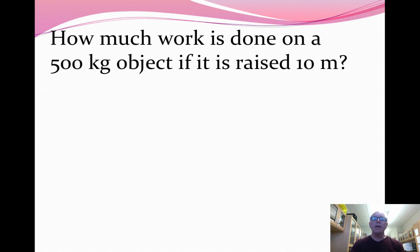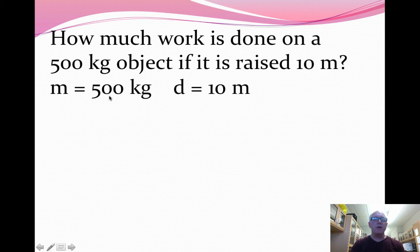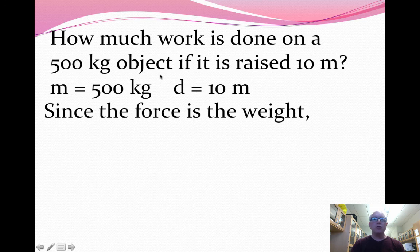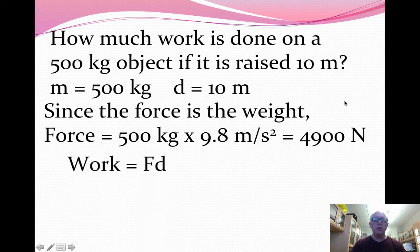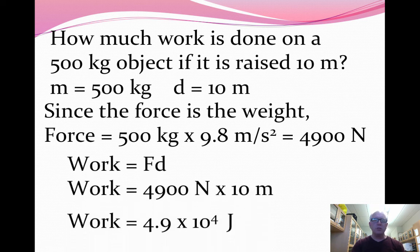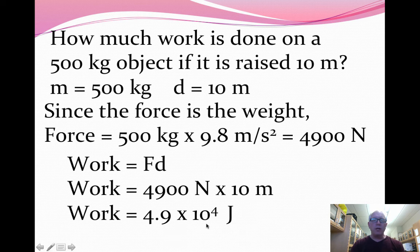Back again. Hopefully that worked out for you. First step is identifying the information. There's the mass and the distance. Since the force is the weight, you're going to multiply that mass, 500 kilograms, by 9.8. So the force is 4,900 newtons. When you multiply the force times the distance, you get 4.9 times 10 to the fourth, or 49,000. Here I'm using the scientific notation, which I've been throwing into some of our calculations for a little while now.